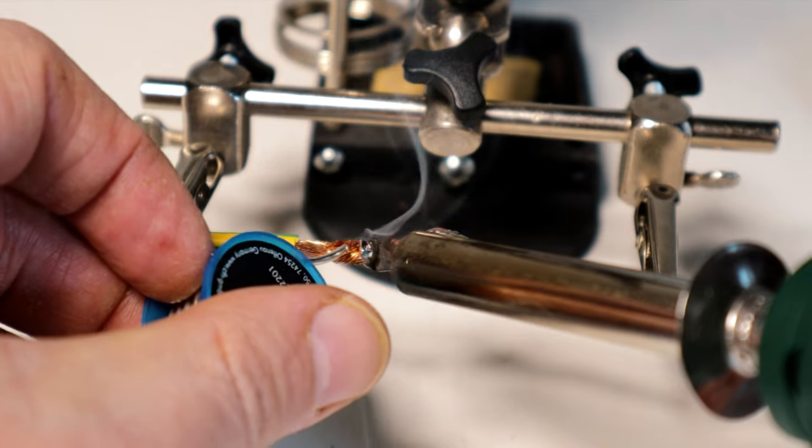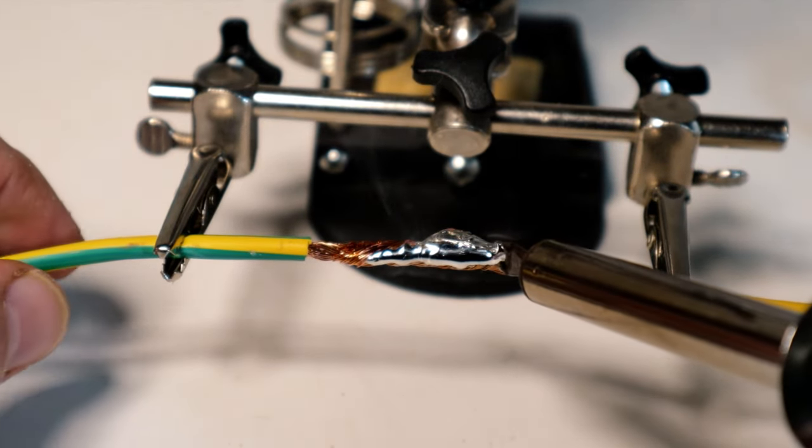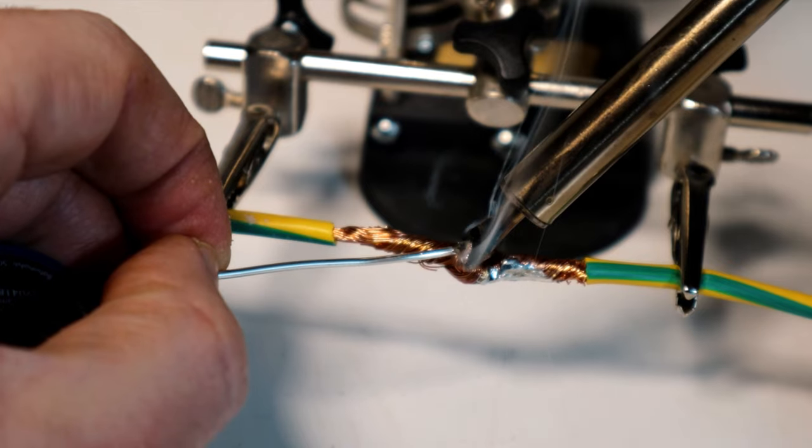Heat the soldering iron for a few minutes before used to reach the right temperature, to be set if possible between 200 and 450 degrees, depending on the type of tin and the components to be soldered.